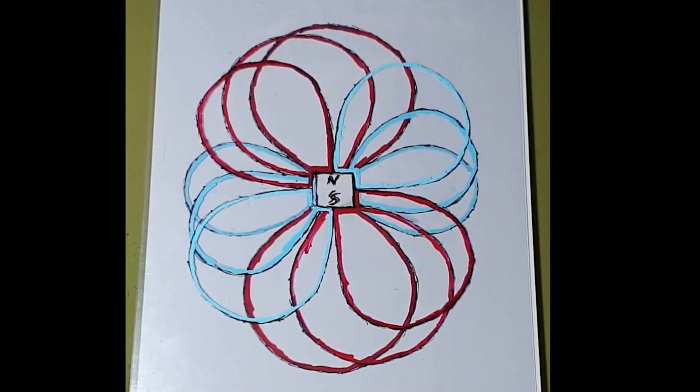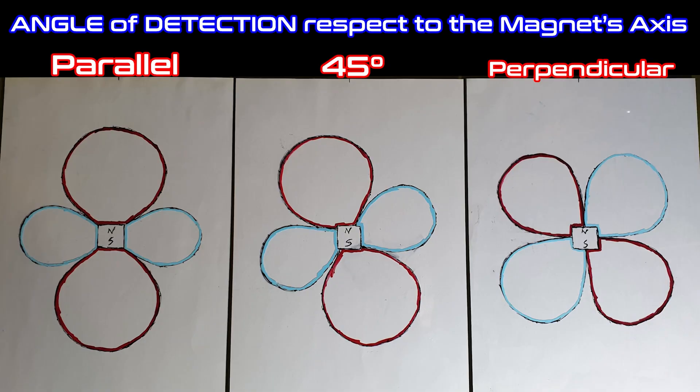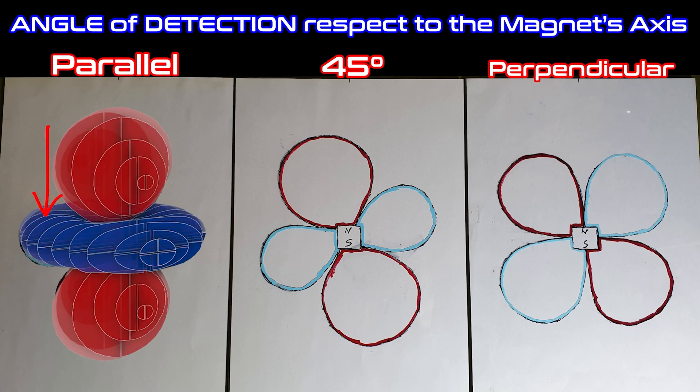But that's not all. Now we can even start to understand the nature of these shapes. Of course, these figures are represented in 2D for easier interpretation. But in reality, this would be the classic toroid around the magnet.